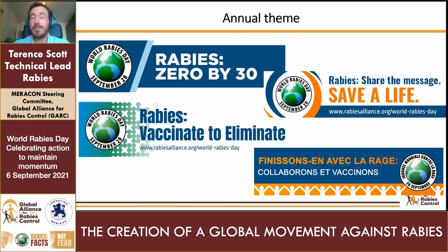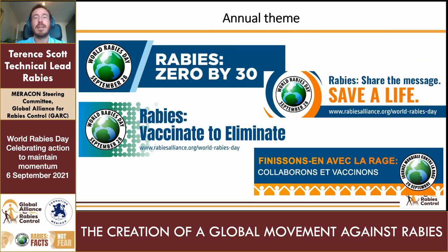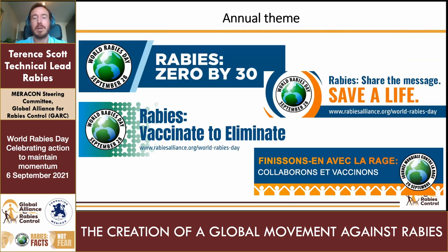Every year there is an annual theme for Rabies Day, based on the current global situation in terms of rabies control and elimination, but also influenced by current events around the world. You can see the different themes throughout the years, including the '0 by 30' theme, with the launch of the global strategic plan and continuing through the different years towards this year's theme.